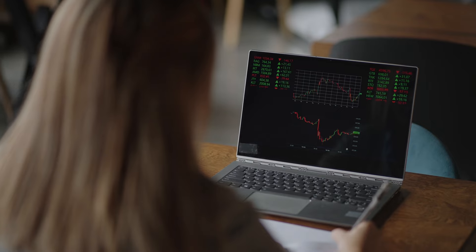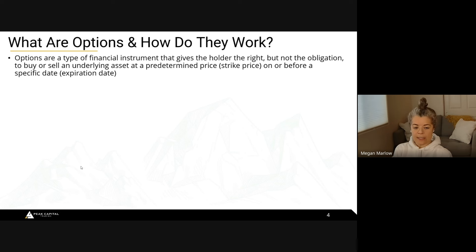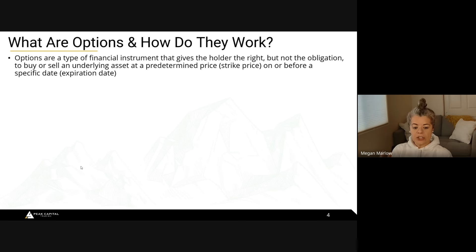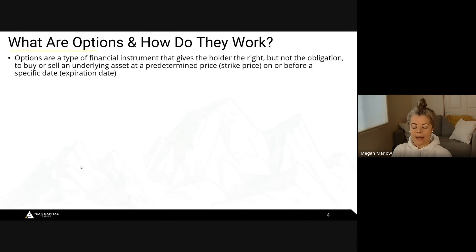You don't have to buy a strike price at $190 just because Apple is at $190 — you can buy contracts at $195, at $180, wherever you want. This gives the holder the right, but not the obligation, to have those shares at expiration at that particular strike price. For intraday option positions, we're not looking to end up with the shares at the end — we're trading the contracts back and forth as the vehicle.